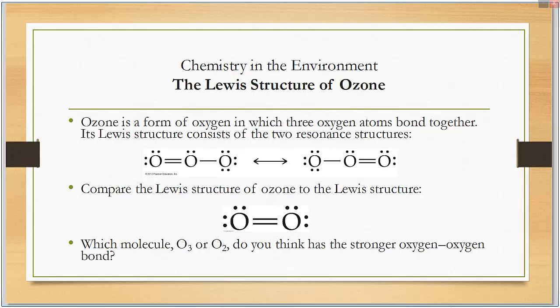Ozone is another example of this. Ozone is a form of oxygen in which three oxygen atoms bond together. And the Lewis structure consists of two resonance. Notice here it's still O, O, O. But on the left hand side, the double bond on the left. On the right hand side, the double bond on the right. Resonance is drawing both of them.